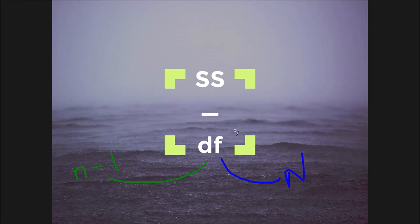So conceptually, sum of squares over degrees of freedom is variance. That is what it is. Alright. So hopefully that makes some sense.